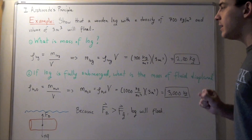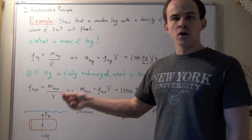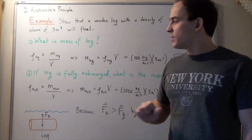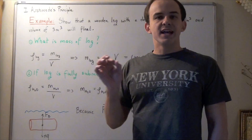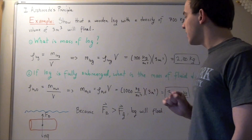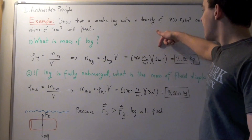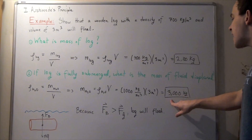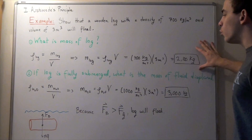We use the density formula for water: density of water equals mass of water divided by volume. By Archimedes' Principle, this volume is the same 3 meters cubed as the log. The density of water is 1000 kilograms per meter cubed, so we multiply by 3 meters cubed and find that the mass of water displaced is 3000 kilograms. This is more than the actual mass of our wooden log.